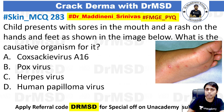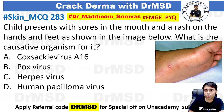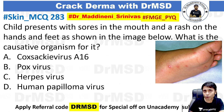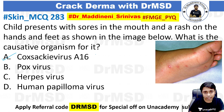Now for this question, please pause the video and try to answer it. A child presents with sores in the mouth and a rash on the hands and feet as shown in the image below. What is the causative organism for this condition? If you have answered option A — Coxsackie A16 — then you are probably right.